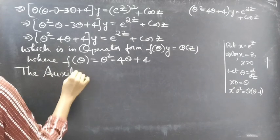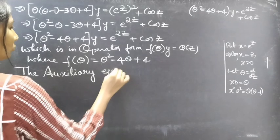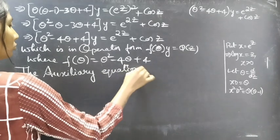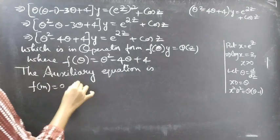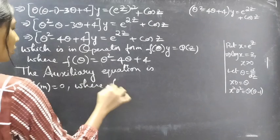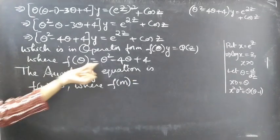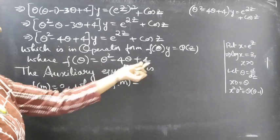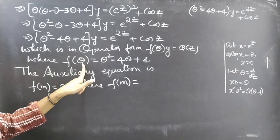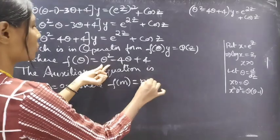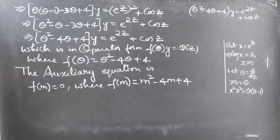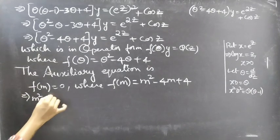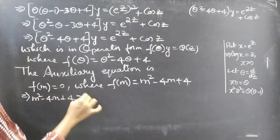The auxiliary equation is f(m) equals 0. We have f(theta) equals theta² minus 4·theta plus 4. Replacing the differential operator theta by m, we get f(m) equals m² minus 4m plus 4. So the auxiliary equation becomes m² minus 4m plus 4 equals 0.